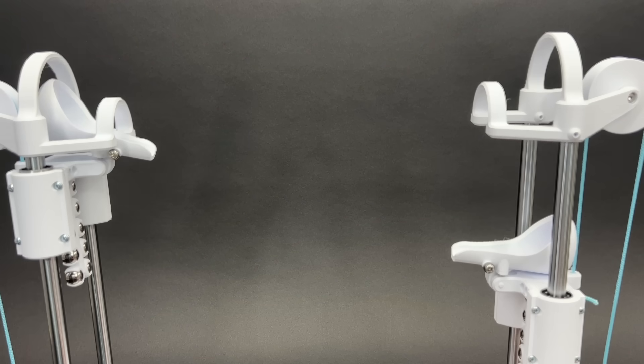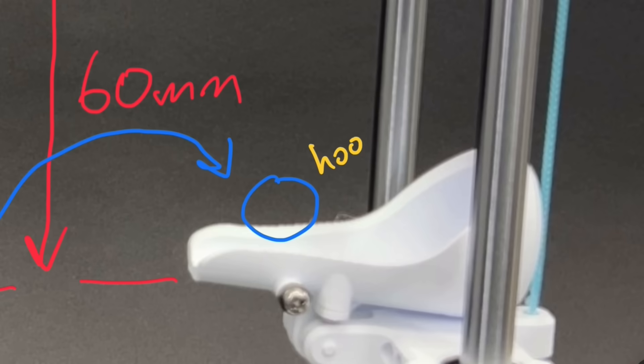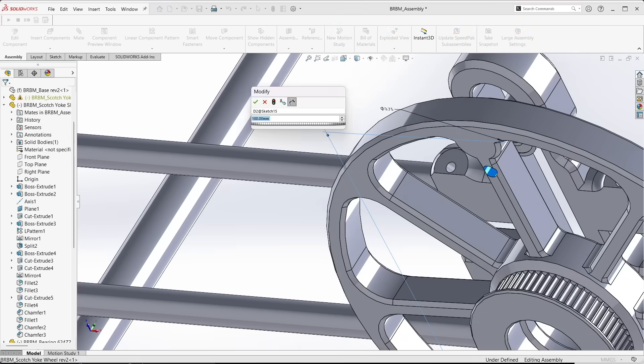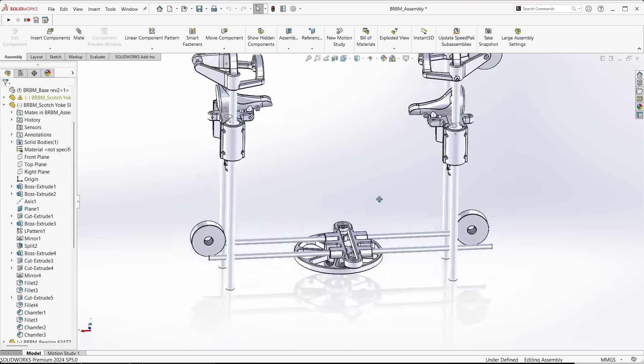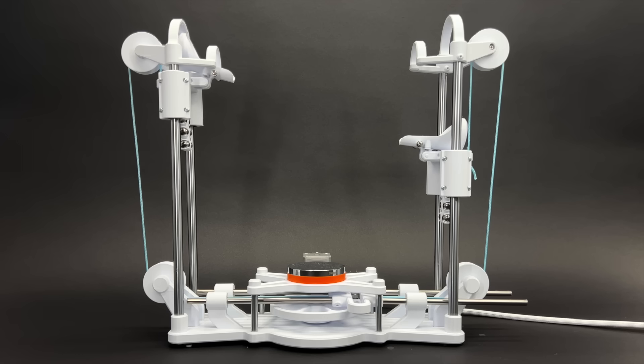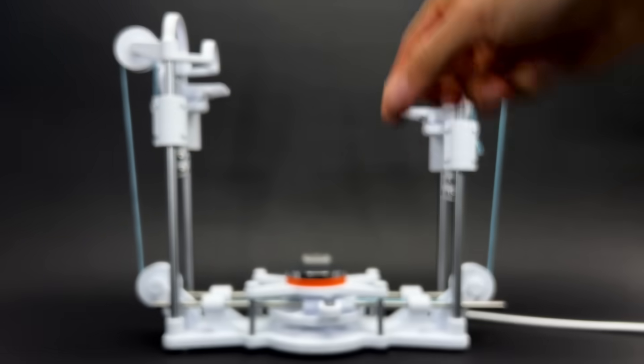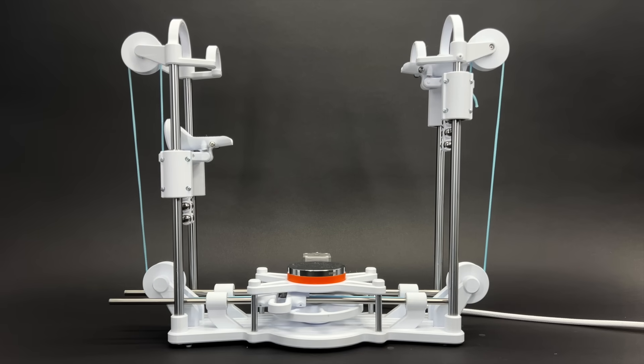This means I need the lower catcher to be at least 60 millimeters below the upper catcher in order to catch the ball. Adjusting the distance this bearing is from the center of the wheel allows me to account for the bounce height differential. The only way to really find out if this thing is actually going to work though is to just throw a ball into one of the catchers and let it run.